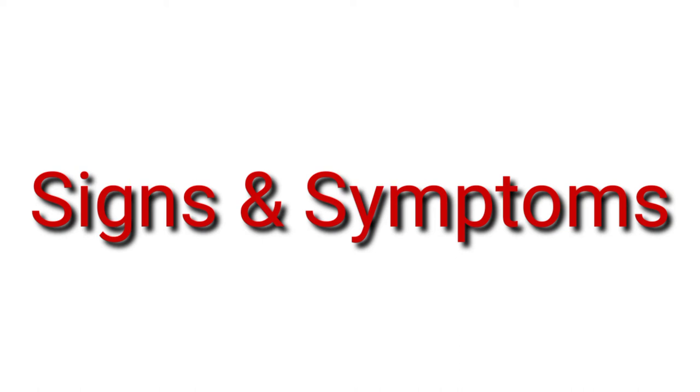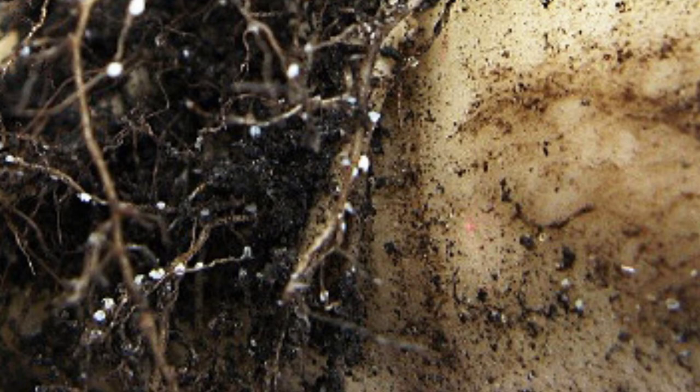Signs and symptoms of sugar beet cyst nematode include fields that may be uniformly infested or may have localized areas of infestation. Look for circular to oval spots where poor plant stands and growth are observed. The pathogen can attack a plant of any age, and seedlings or young plants may be killed, resulting in reduced stands. The most easily recognized sign of infection is the white to pale yellow lemon-shaped adult females attached to roots.